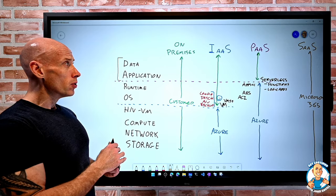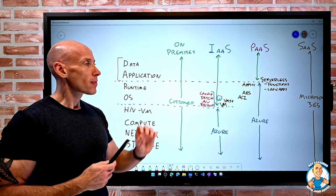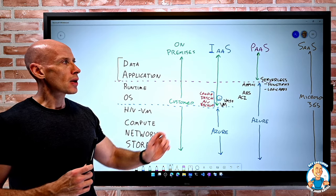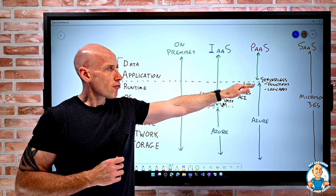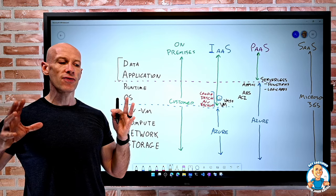Now, we previously drew all of these different types. We have the idea of running things on premises, infrastructure as a service, i.e. a VM, platform as a service of which there are different types, and then software as a service where a complete business function is delivered.